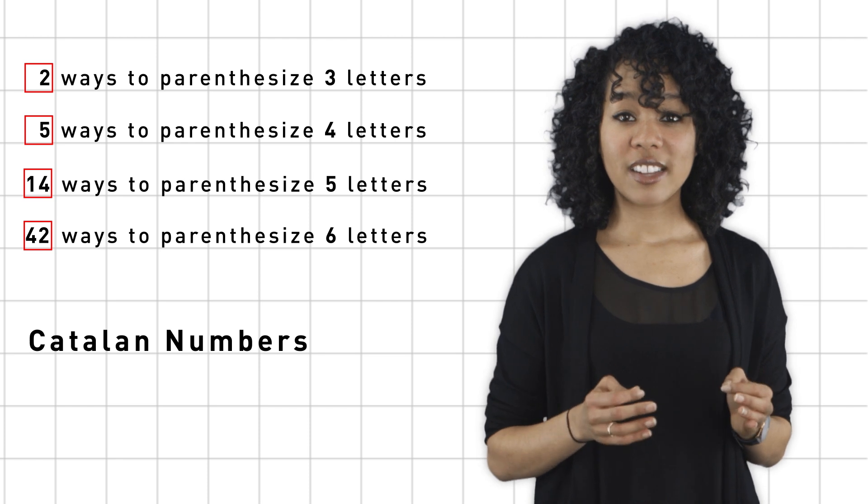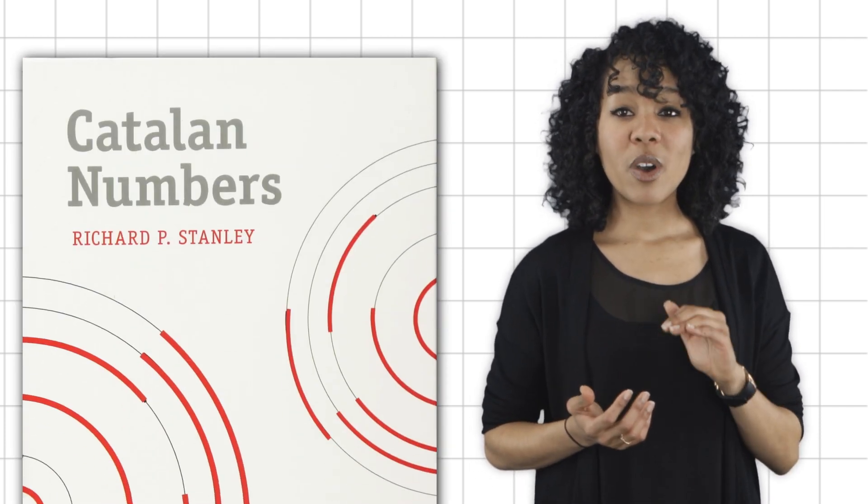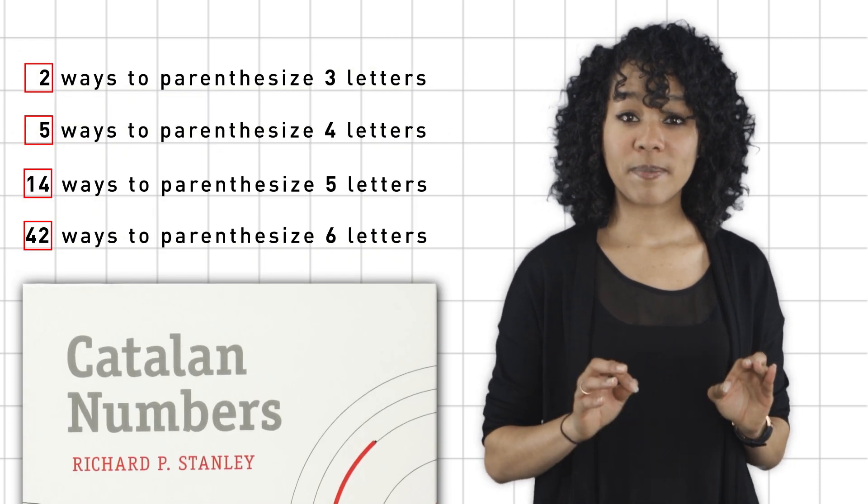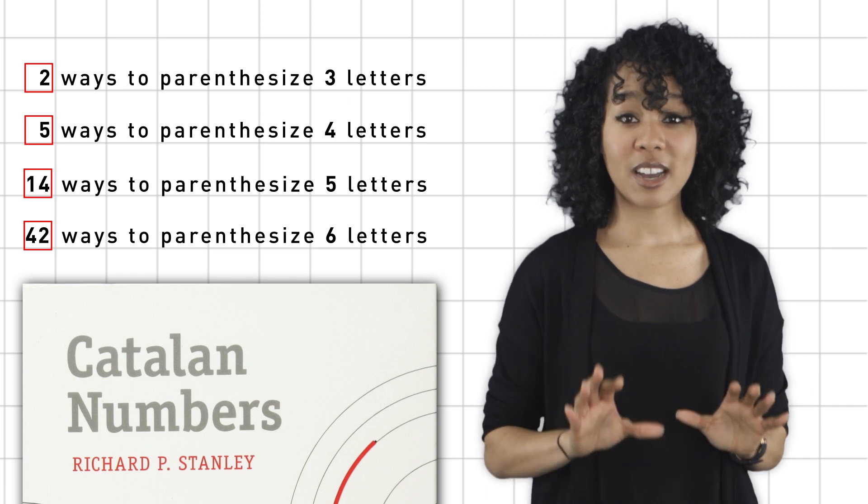So needless to say, associahedron played a big role in combinatorics. But in this episode, we're dealing mainly with topology.